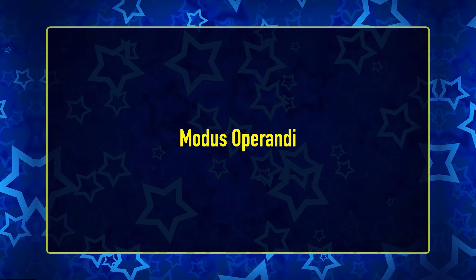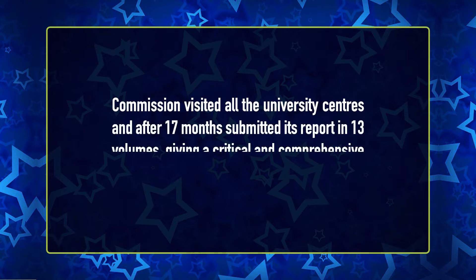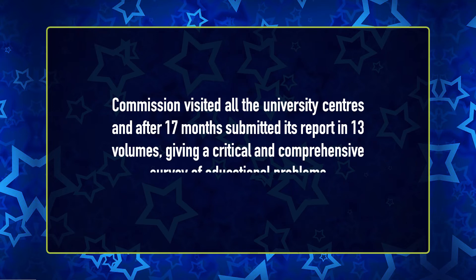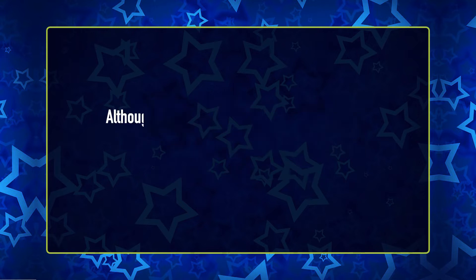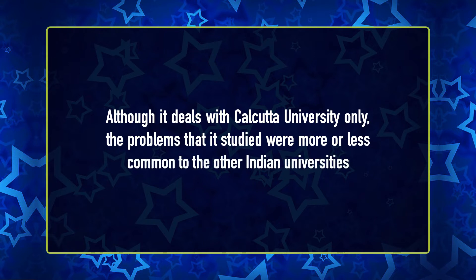Regarding its modus operandi, the Commission examined secondary education as it formed the basis for university education. It visited all the university centres and after 17 months submitted its report in 13 volumes, giving a critical and comprehensive survey of educational problems. Although it dealt with Calcutta University only, the problems it studied were more or less common to other Indian universities. This report greatly influenced the subsequent course of secondary and higher education in the country.